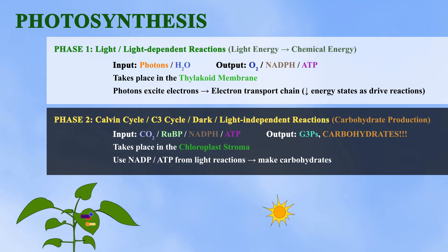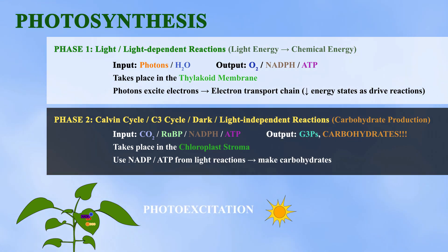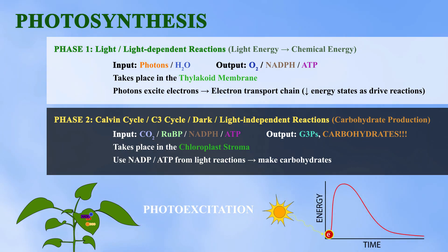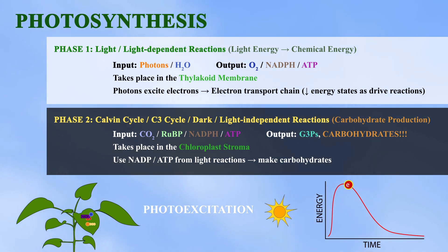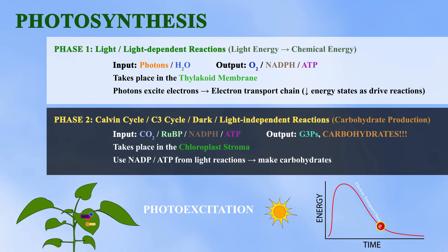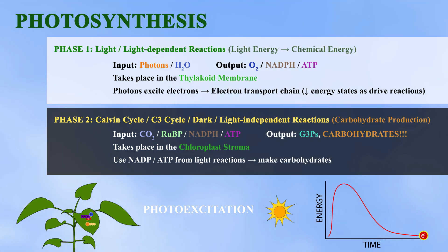These reactions take place in the thylakoid membrane and involve photoexcitation. In other words, a photon brings an electron to a higher energy state. The energy from this excited electron is harnessed via an electron transport chain, and the electron goes back to a lower energy state as it does a bunch of work for the plant.